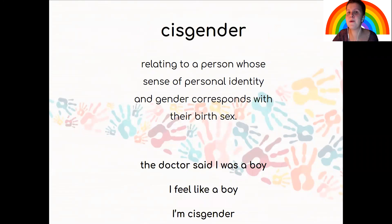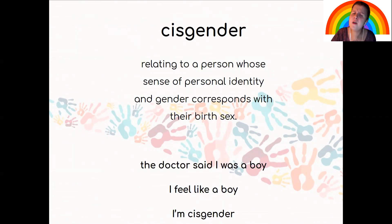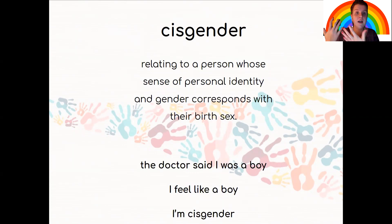The second important definition is cisgender — relating to a person whose sense of personal identity and gender corresponds with their birth sex. Which means, when I was born, the doctor said I was a boy, I feel like a boy, I'm cisgender. So, it means that I feel okay with the sex I was assigned at birth.